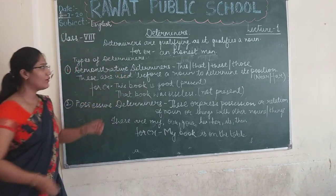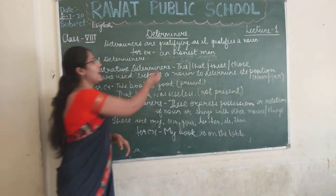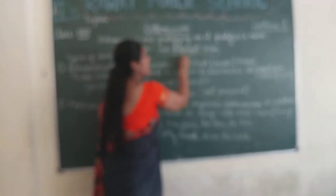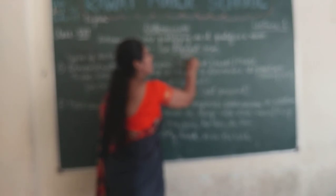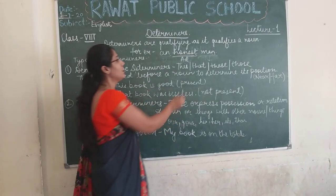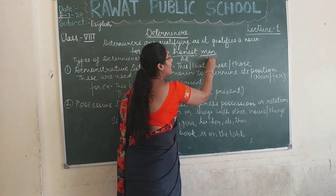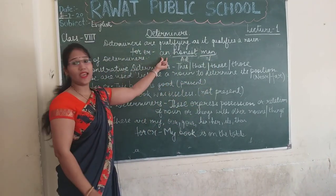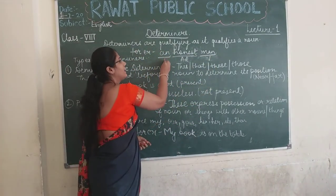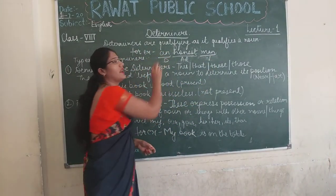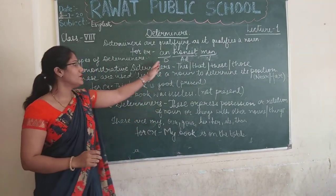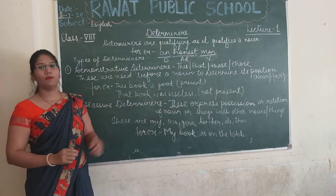For example, 'an honest man' — yahan 'honest' hai adjective kyunki yahan us man ki quality batate hain, but yahan par man singular hai ya plural hai woh hum 'an' se pata karenge. Ek tarike se determiners mein 'an' aisa toh article na aata hai but it comes under determiners.